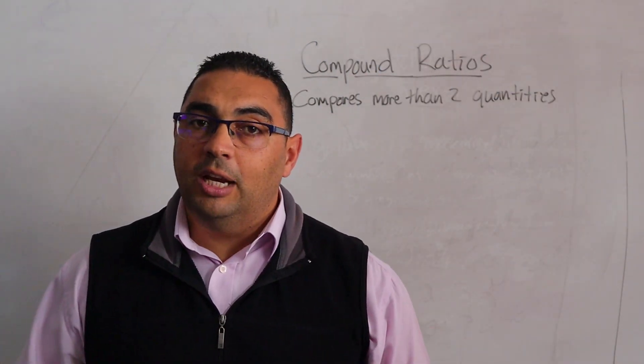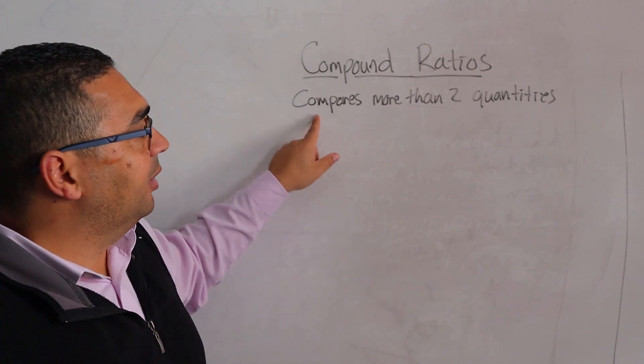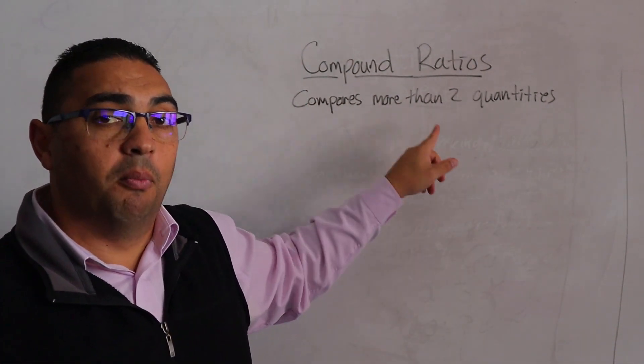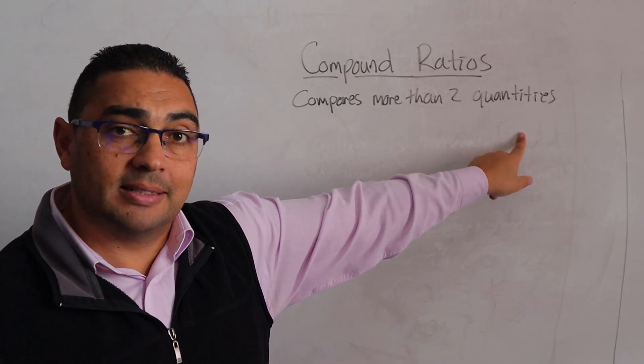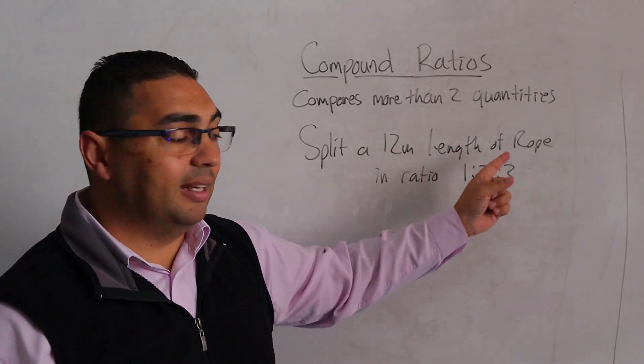Today we're going to talk about compound ratios, and here we are talking about a ratio that compares more than two quantities. Here's an example: they want us to split a 12 meter length of rope in a ratio of 1:2:3.